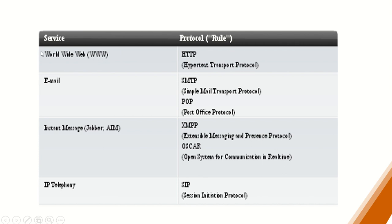These are examples of the protocols mentioned earlier — these are the rules, protocols, and services. Services refer to the activities activated while we are online or connected to the network. For instance, when you open a browser like Google Chrome, Internet Explorer, or Mozilla Firefox, you type in a URL such as www.google.com to search for anything, or www.facebook.com to visit Facebook.